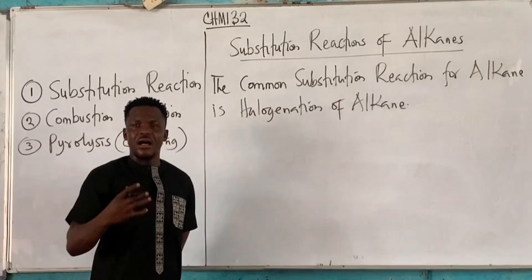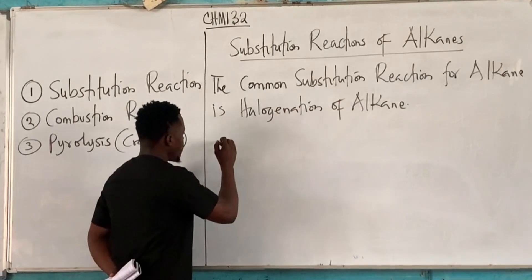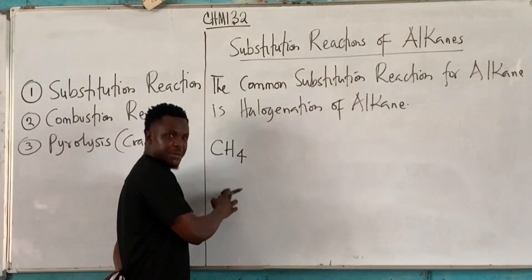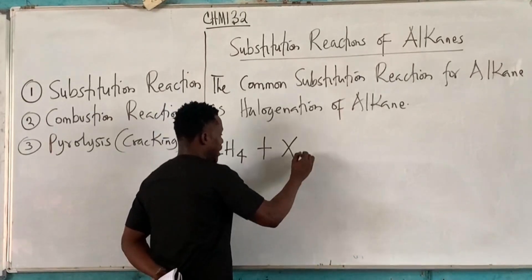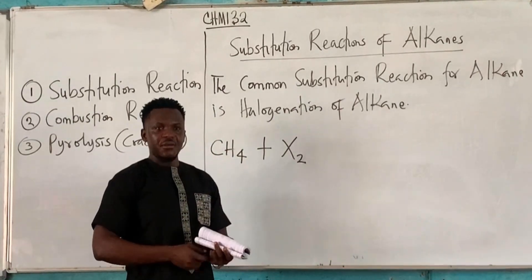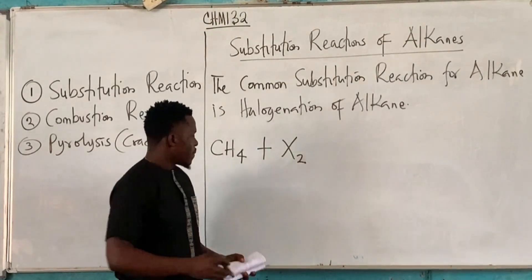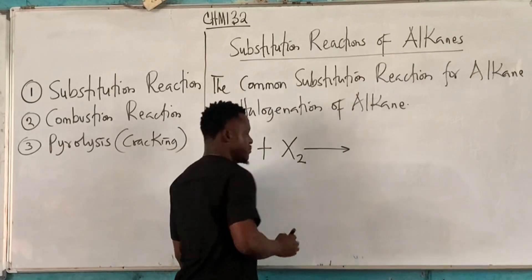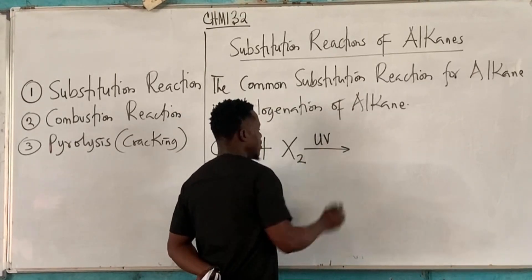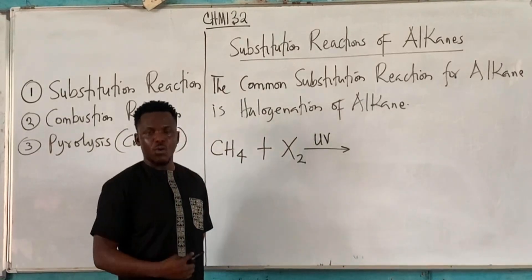This reaction of alkanes with halogens — let's use the simplest alkane, which is methane. Let's use X to represent the halogen. This X can be fluorine, chlorine, or bromine, as the case may be. This reaction is always carried out in the presence of UV light or sunlight.